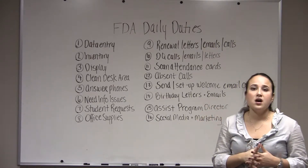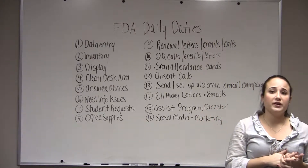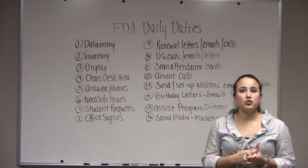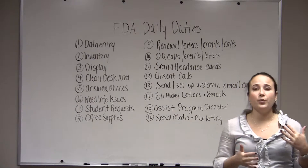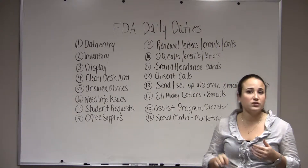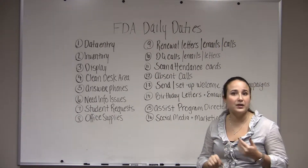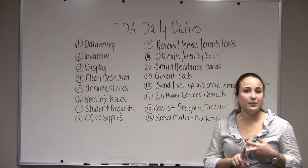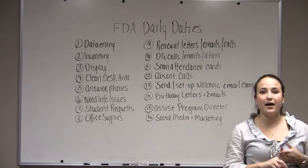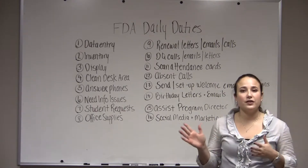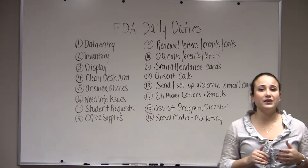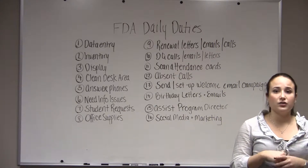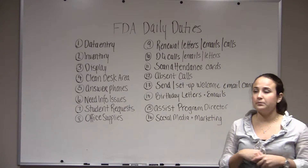Inventory is a big one. You want to make sure that weekly you are checking up on inventory — how many uniforms do you have, how many belts, how many pairs of gloves, and so on. You want to make sure you always have an accurate list in your store in Perfect Mind.